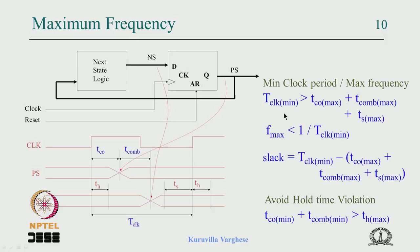If there is a hold time violation, you find that TCOmin plus Tcompmin is less than hold time. The clock is not something to consider here because in the earlier analysis we consider timing from one clock edge to the next, but for hold time violation we are talking about the same clock edge. The only way to solve a hold time violation is to increase the combinational delay or add dummy logic. This can happen when combinational delay is minimal or absent, like in a shift register where the flip-flops' TCO is normally greater than hold time.